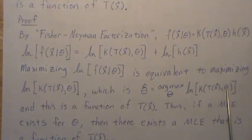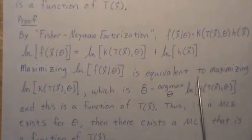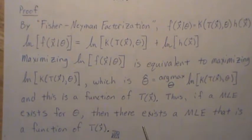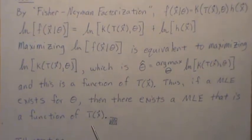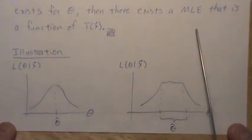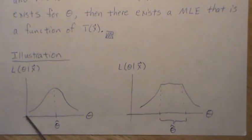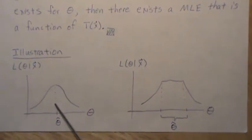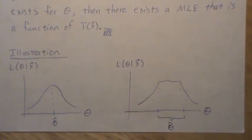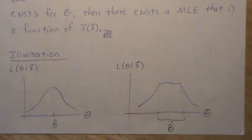When we plug in values, we increase and lower the function, and somewhere it reaches a maximum — a function of our statistic. Thus, if an MLE exists for theta, there exists an MLE that is a function of our statistic. End of proof. For illustration, if we have a likelihood with a unique maximum, it can clearly be expressed as a function of our statistic T.